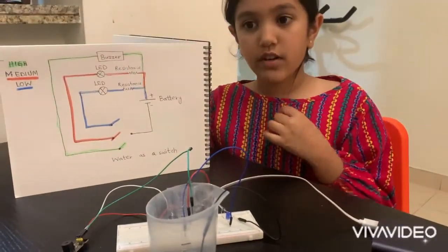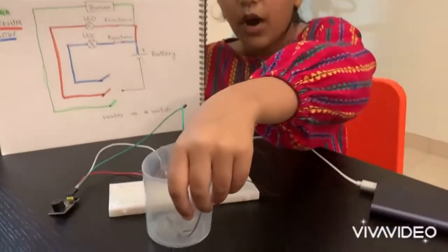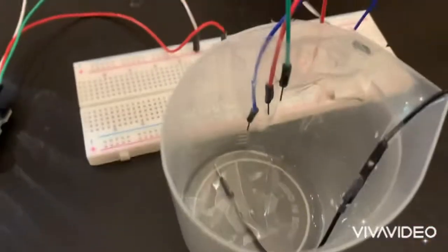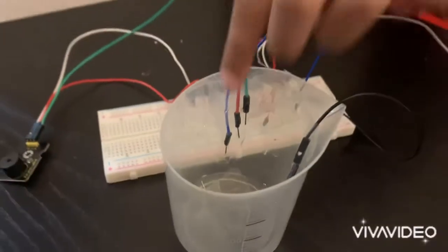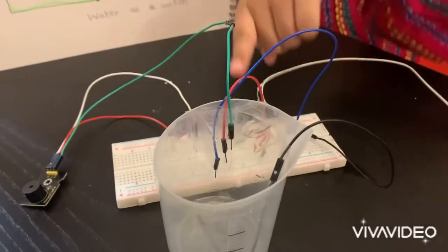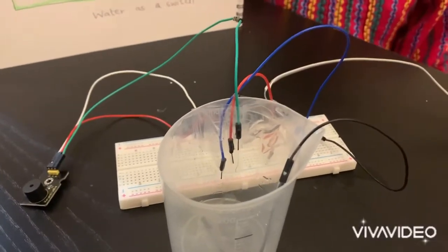The ground of the battery is at the bottom of this cup right here. And the ground of the other components are on the side here, level-wise.